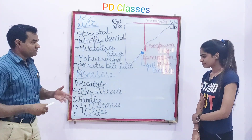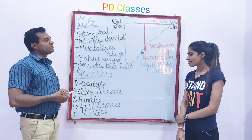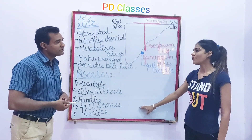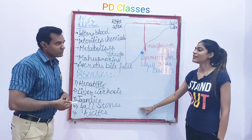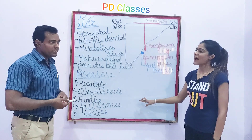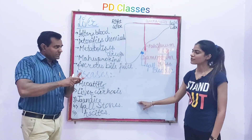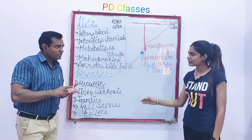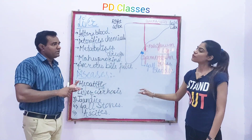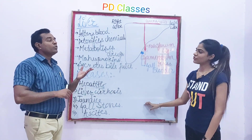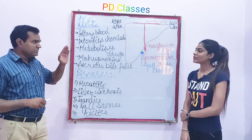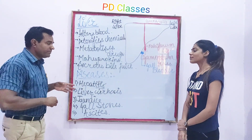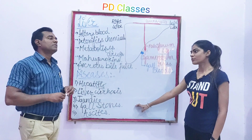Gallstones are very common nowadays. There is a mnemonic: 4F — Fat, Fertile, Female, and Forty (approximately 40 years of age). This means fat females who are fertile and around 40 years of age suffer more from gallstones in comparison.